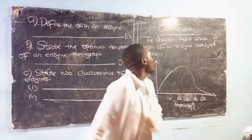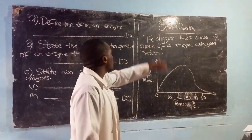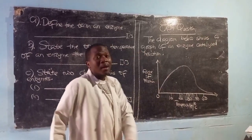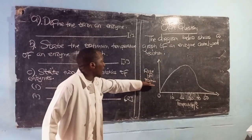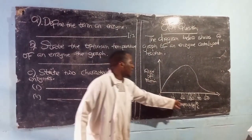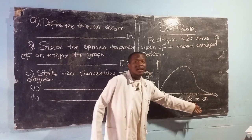Let's turn to look at the question. The diagram below shows a graph of an enzyme catalyzed reaction. On the one axis you have the rate of reaction, on the x-axis you have the temperature given in degrees Celsius.